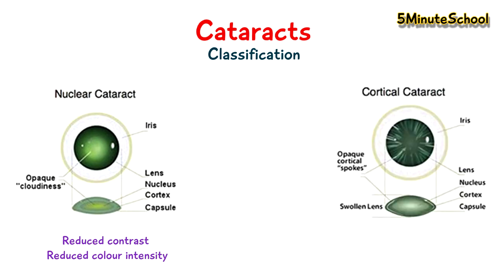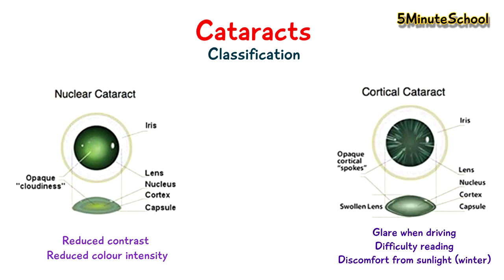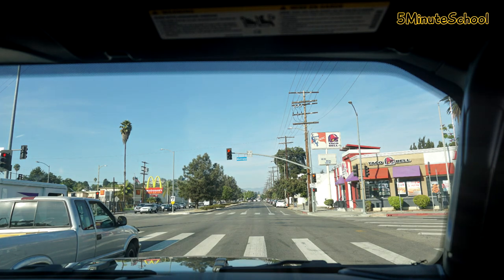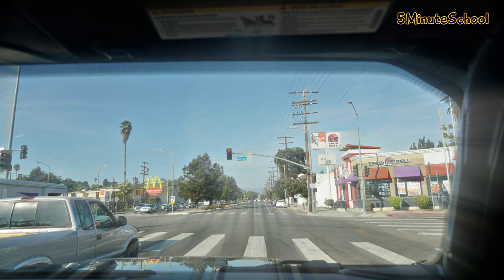Another type is cortical cataracts, and this type can cause problems with glare when driving and can also cause difficulty reading. There is often discomfort from sunlight during the winter time, and that's because the sun is lower on the horizon.